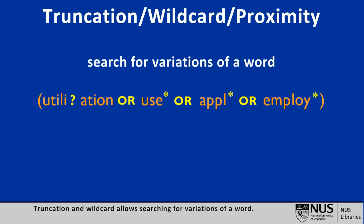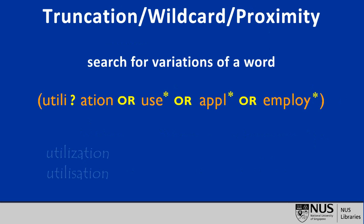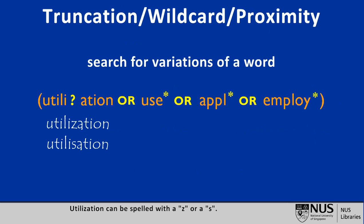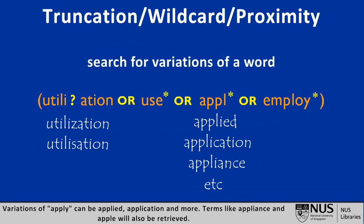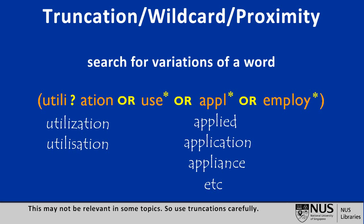Truncation and wildcard allows searching for variations of a word. Utilization can be spelled with a Z or an S. Variations of 'apply' can be: applied, application, and more. Terms like 'appliance' and 'APA' will also be retrieved, which may not be relevant in some topics. So use truncations carefully.